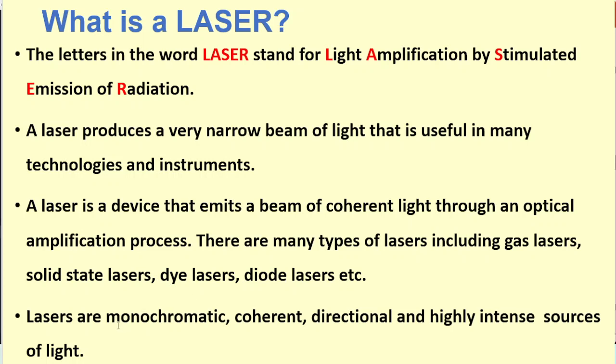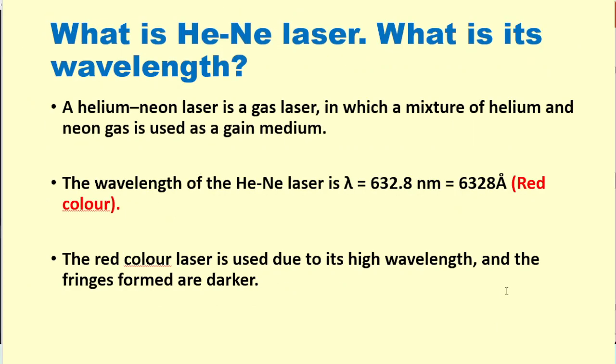What is helium-neon laser and what is its wavelength? A helium-neon laser is a gas laser in which a mixture of helium and neon gas is used as the gain medium. The wavelength of helium-neon laser is λ = 632.8 nanometers or 6328 angstroms, which is red color. The red color laser is used due to its high wavelength, and the fringes formed are darker.